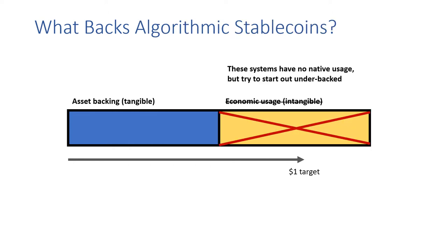So how does this help us understand the recent collapse of many algorithmic stablecoins? These systems try to start with under 100% asset backing, but at the same time they start with no native usage, which means the value from economic usage is very low. As a result, the peg often breaks in speculative attacks.